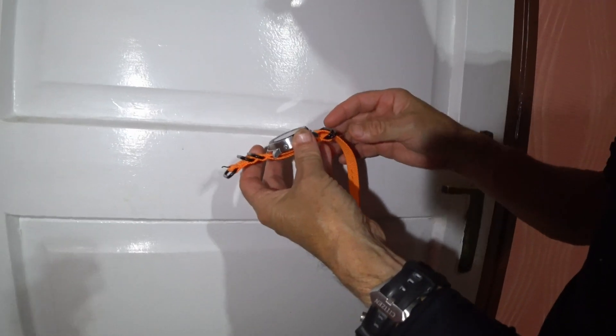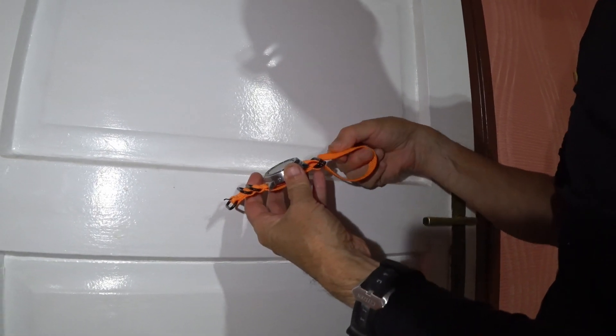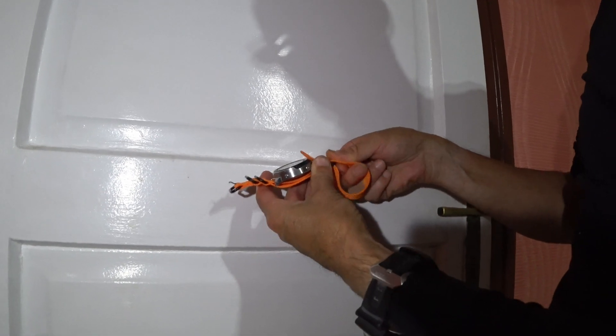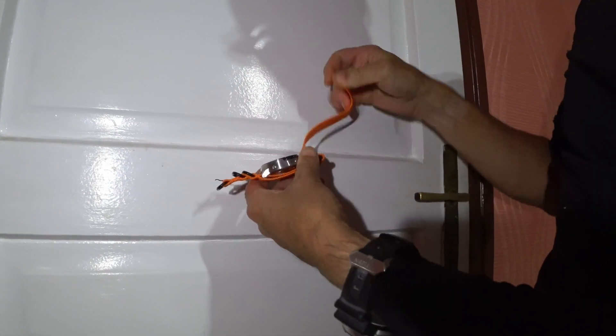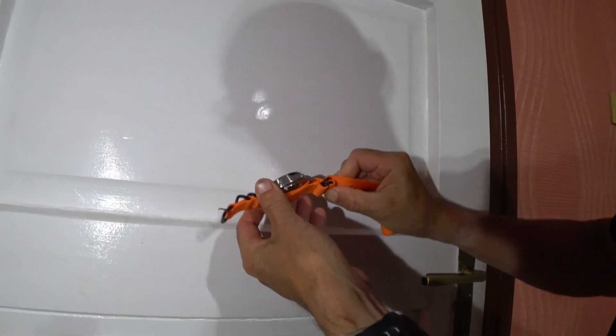But really, if you want to lock this down, the idea is to go like this: to put it through both, then back through here, right over the top, and then like this. And then that locks. You see that there? The more you pull on that, the more that locks.